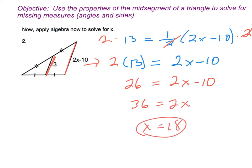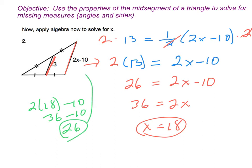It's probably worth taking a quick second and plugging in just to check our work. So if I put in 18: 2 times 18 minus 10 gives me 36 minus 10, which is 26. That length is 26, and 2 times 13 is indeed 26, so I'm pretty confident I got that one correct.